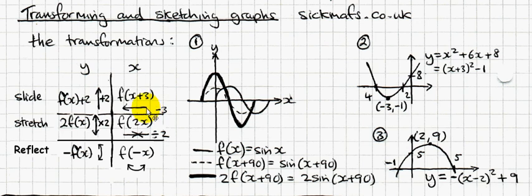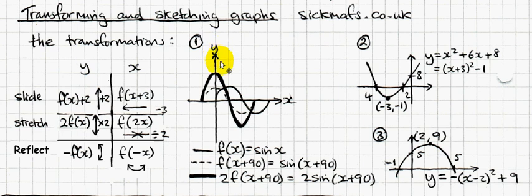A couple of rules: on the y-side of things — the vertical side — things work like you expect. If you add 2, the graph moves up 2. But if you add 3 inside the function — the horizontal side — it goes minus 3, i.e., left 3. Going right is positive, going up is positive, going left is negative. So adding 3 goes left 3, and subtracting 3 goes right 3. Everything is the opposite on the x-side.